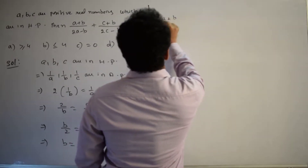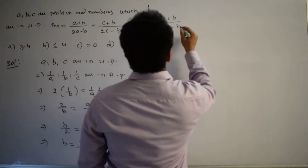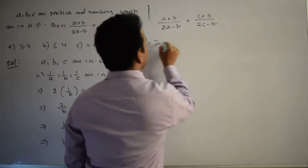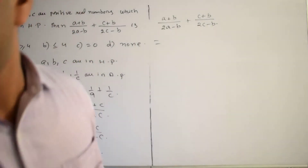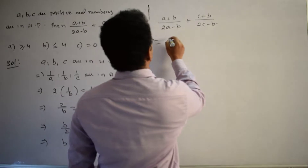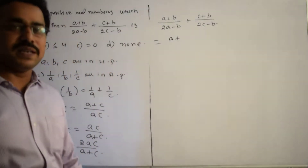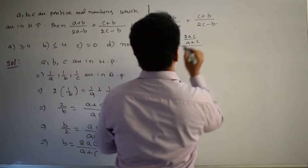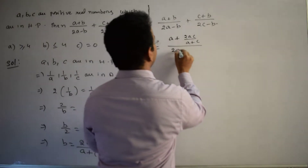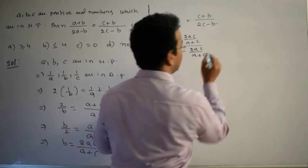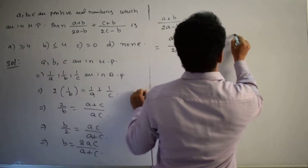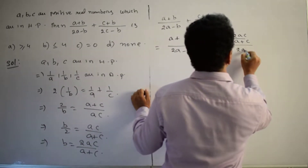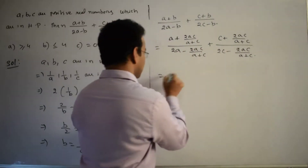This implies (A + B)/(2A - B) + (C + B)/(2C - B). Now let's substitute the value of B = 2AC/(A + C). So the numerator of the first term becomes A + 2AC/(A+C), and the denominator 2A - 2AC/(A+C). Similarly for the second term: C + 2AC/(A+C) over 2C - 2AC/(A+C).